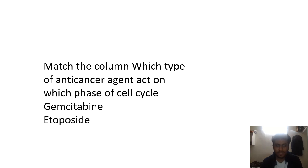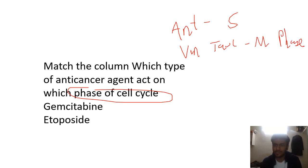Next up, again match the column, but this time on the phase of cell cycle. All anti-metabolites act at the S phase. Vinca alkaloids, taxanes - they act on the M phase.